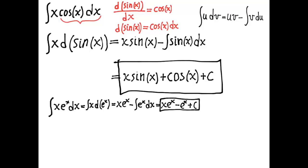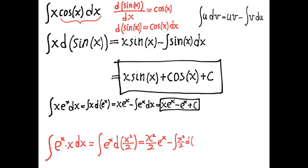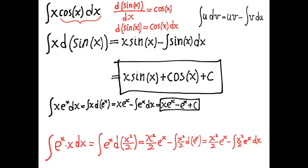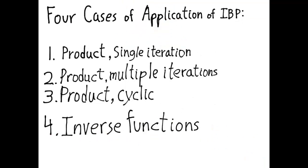Sometimes you might pick the wrong choice for dv. For example, if you had the integral of eˣ·x dx and used x dx as dv, your integration by parts would take an integral with a factor of x to the first power and rewrite it as an integral with a factor of x squared — that's worse than the original. When that happens, it alerts you that you went in the wrong direction; instead of choosing x dx, you should have chosen eˣ dx. That's the end of the first example: product rule, single iteration.